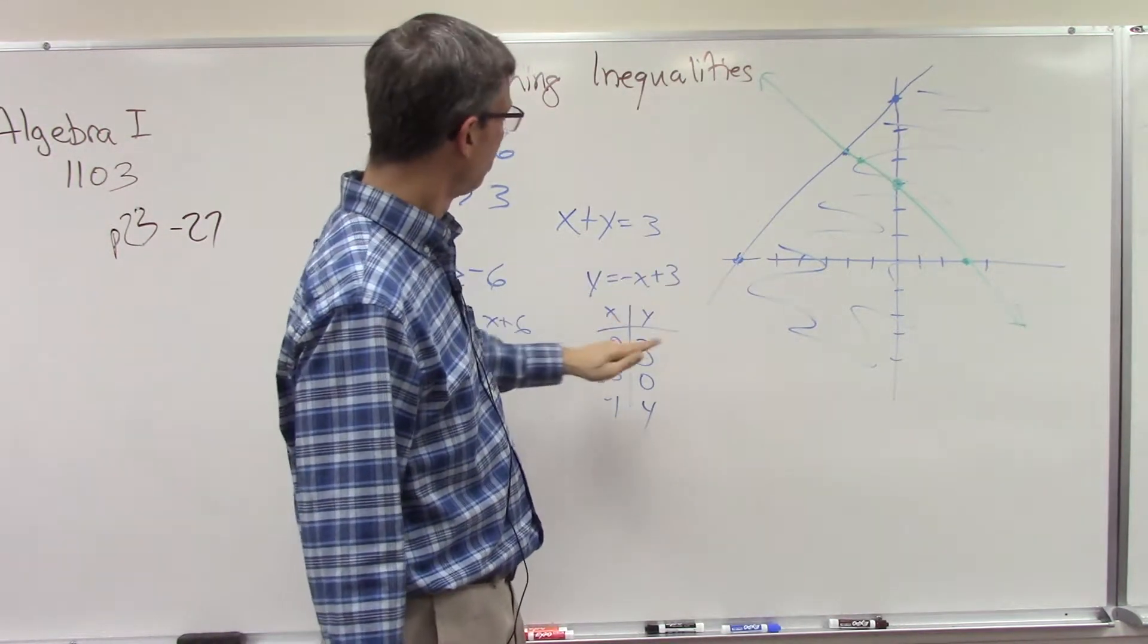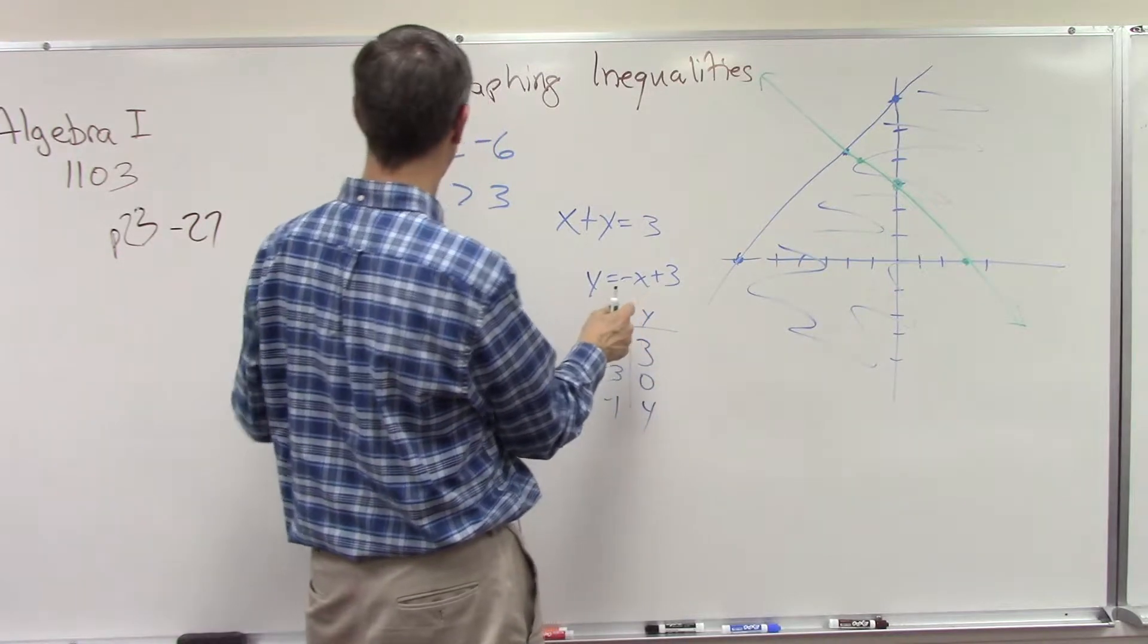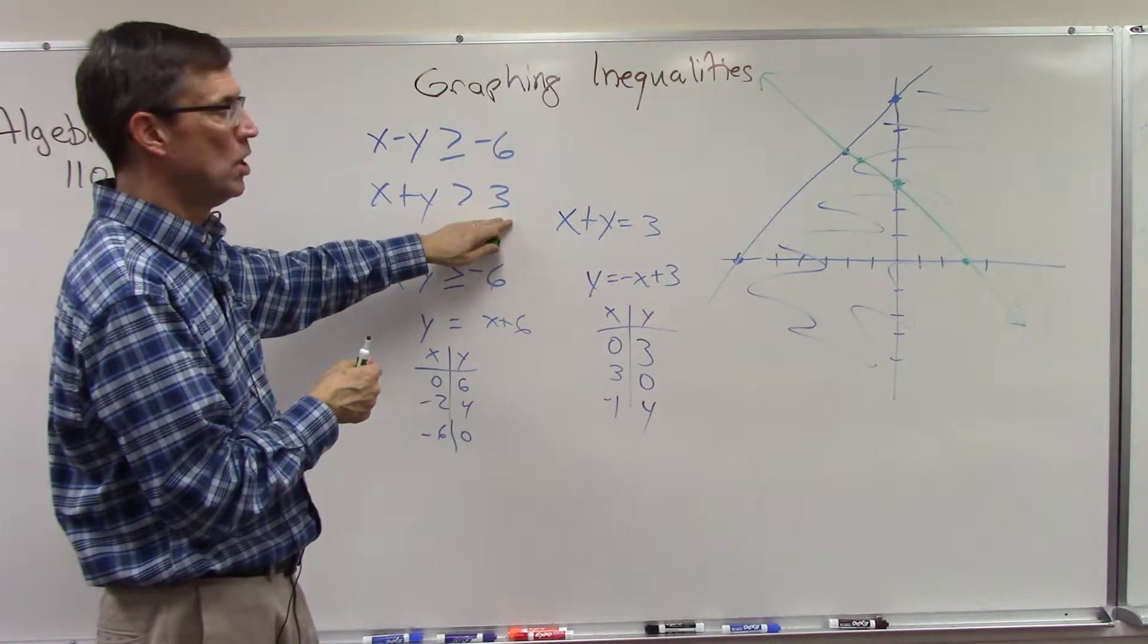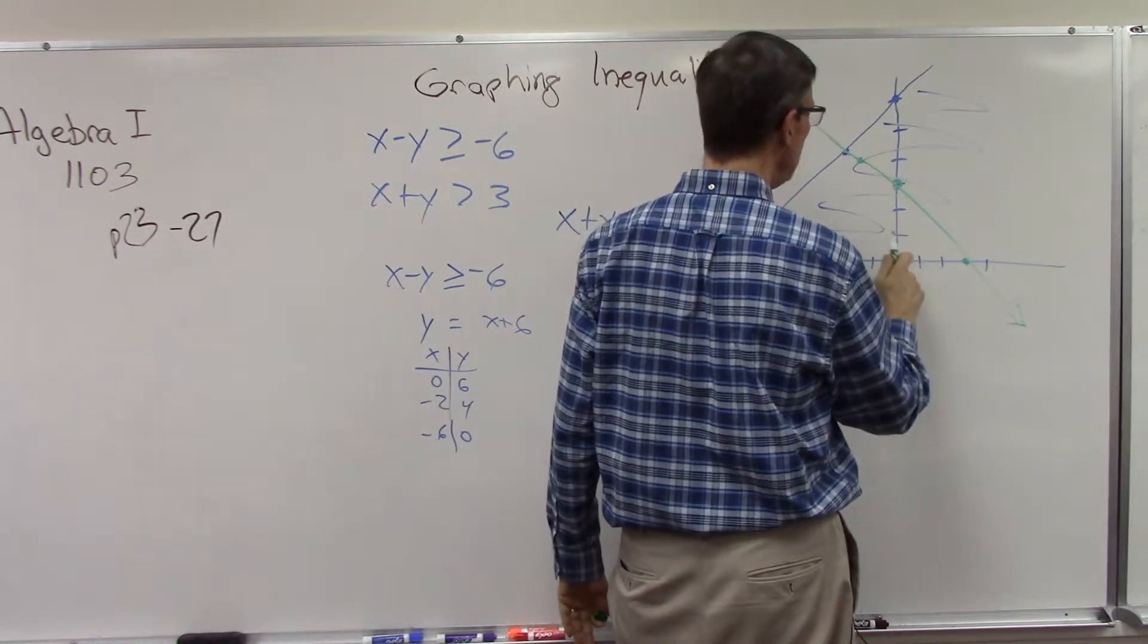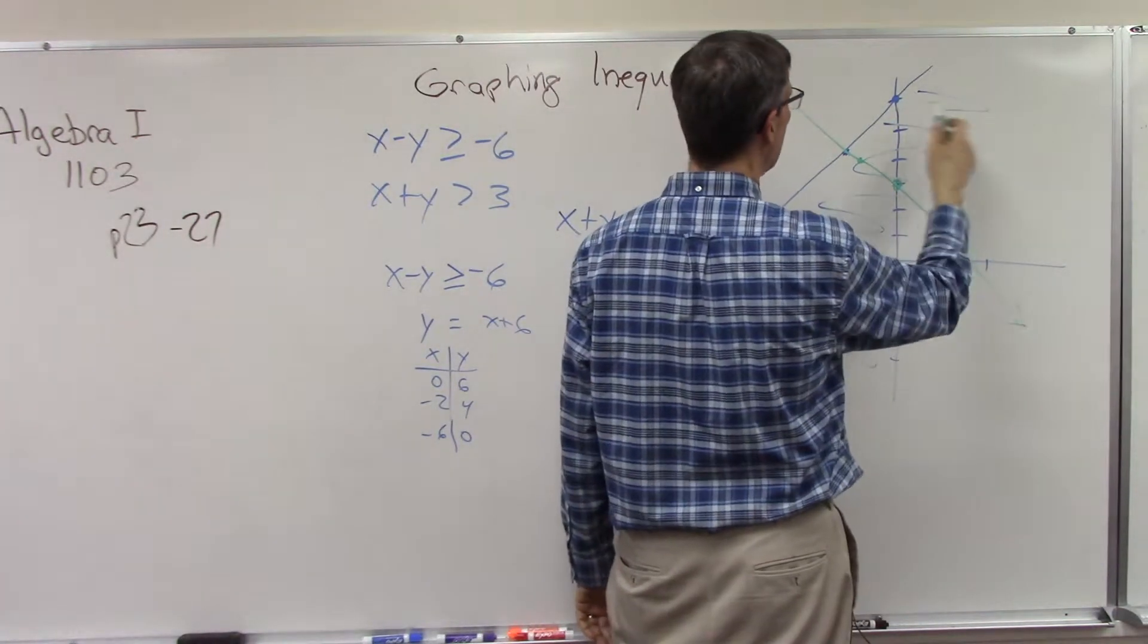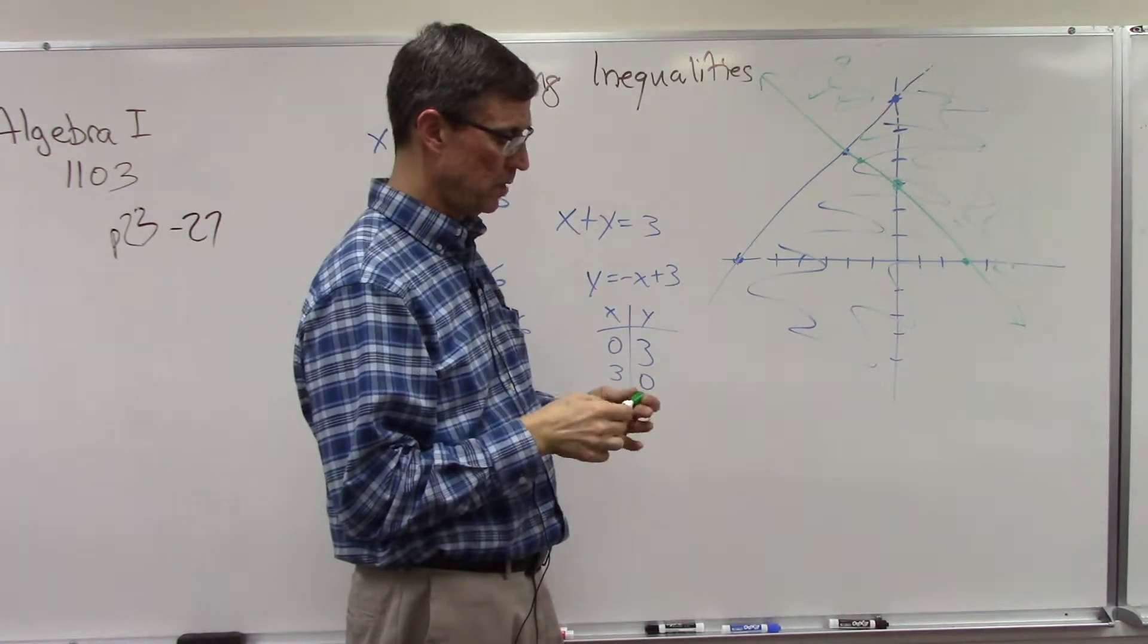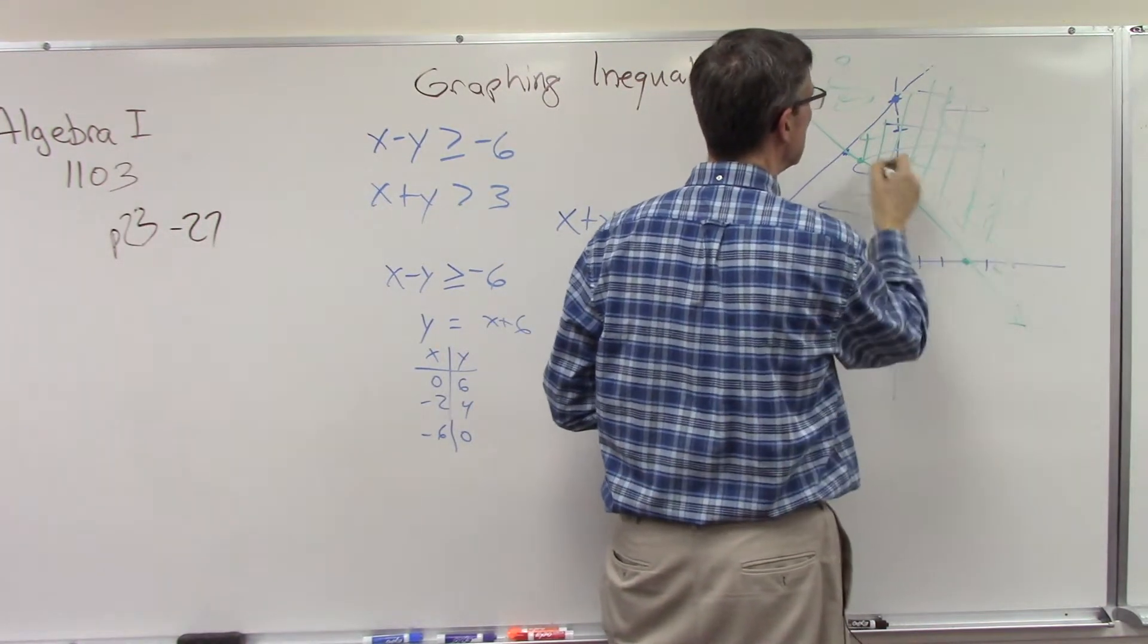Now which side of this line do I shade in? Well, let's take again the test point zero zero. If the original equation here said is greater than, so if I plug in zero zero, is greater than three—is that a true statement? I get zero is greater than three, no that is a false statement. So since that is a false statement then I do not include the side of that line that has that test point zero zero in it. I go to the other side of the line, so that means I'm going to shade this side.